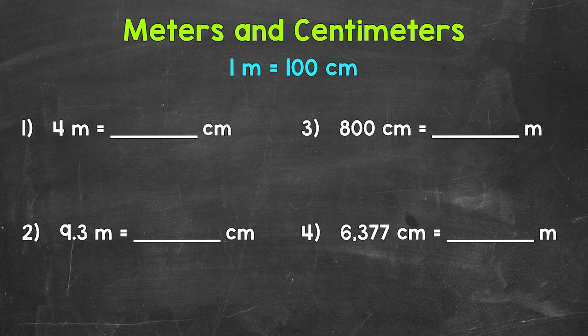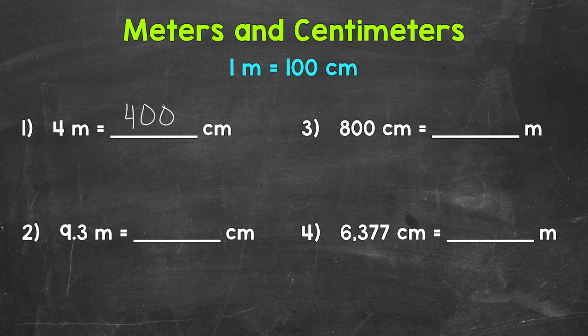Number 1: 4 meters equals how many centimeters? Each meter is 100 centimeters, so we have 100, 100, 100, and 100 centimeters — in other words, 4 times 100, which is 400. So 4 meters equals 400 centimeters. When we go from meters to centimeters, we multiply by 100.